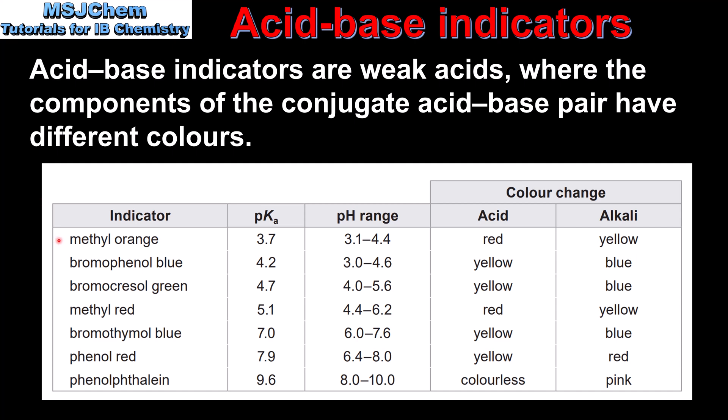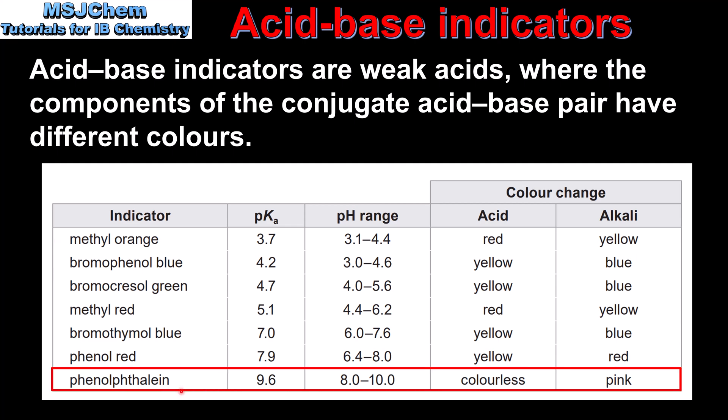Each indicator has a pKa value, a pH range, and the color change in an acidic and alkaline solution. For example, the commonly used indicator phenolphthalein has a pKa of 9.6, a pH range of between 8 and 10, and is colorless in an acidic solution and pink in an alkaline solution.